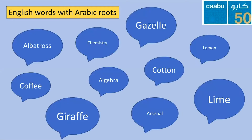Here are some examples of English words with Arabic roots: gazelle, cotton, chemistry, giraffe, coffee, algebra. For example, the word albatross — we know it's a type of bird, but in Arabic the word means 'the diver', referring to a bird that dives into water to catch fish. So knowing the Arabic root teaches us something about the nature and characteristics of this bird.